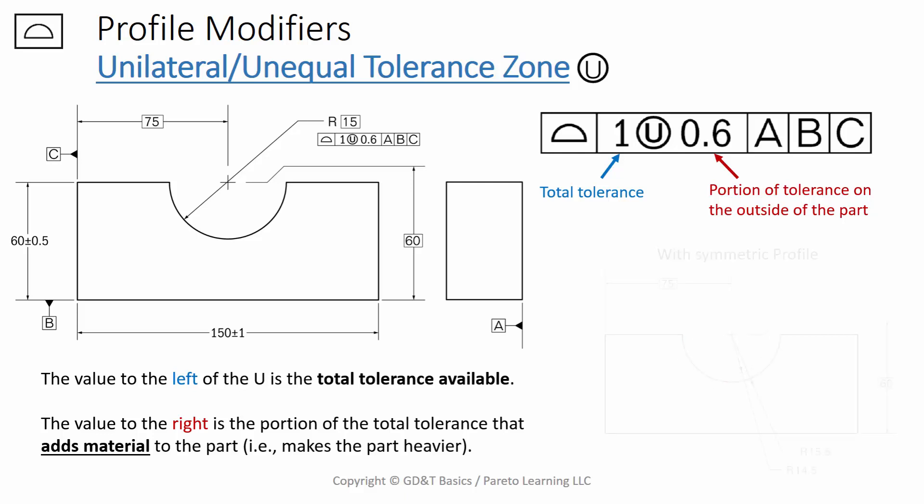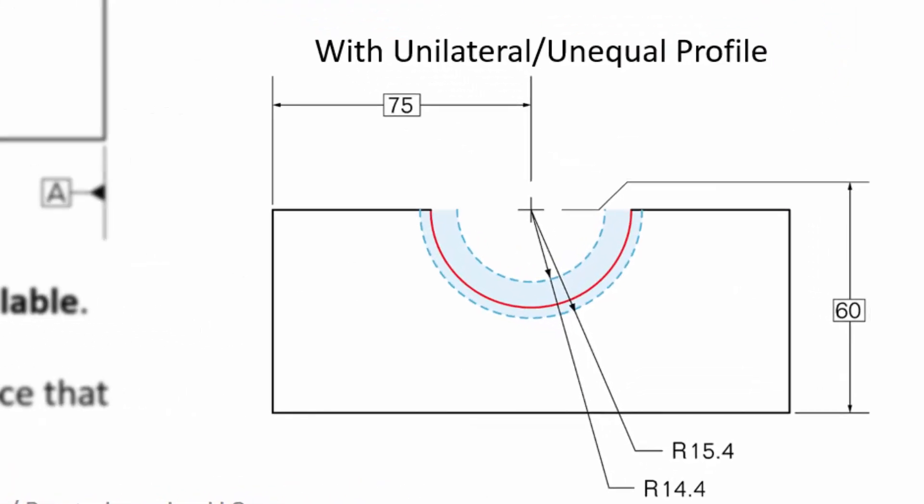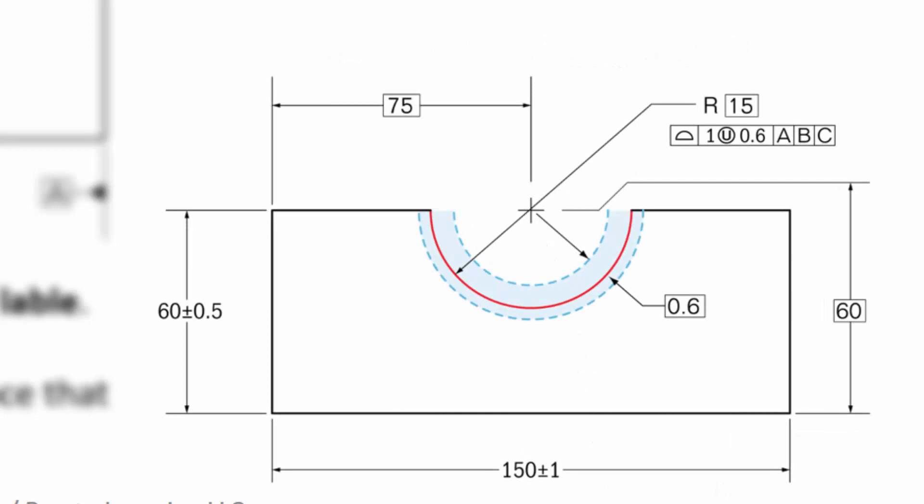Now, you'll recall that the normal profile would center us right at the true profile, plus 0.5, minus 0.5. However now that we've added the unilateral or unequal profile symbol, you can see that our tolerance zone has shifted. Our tolerance range is now located off-center from our true profile.